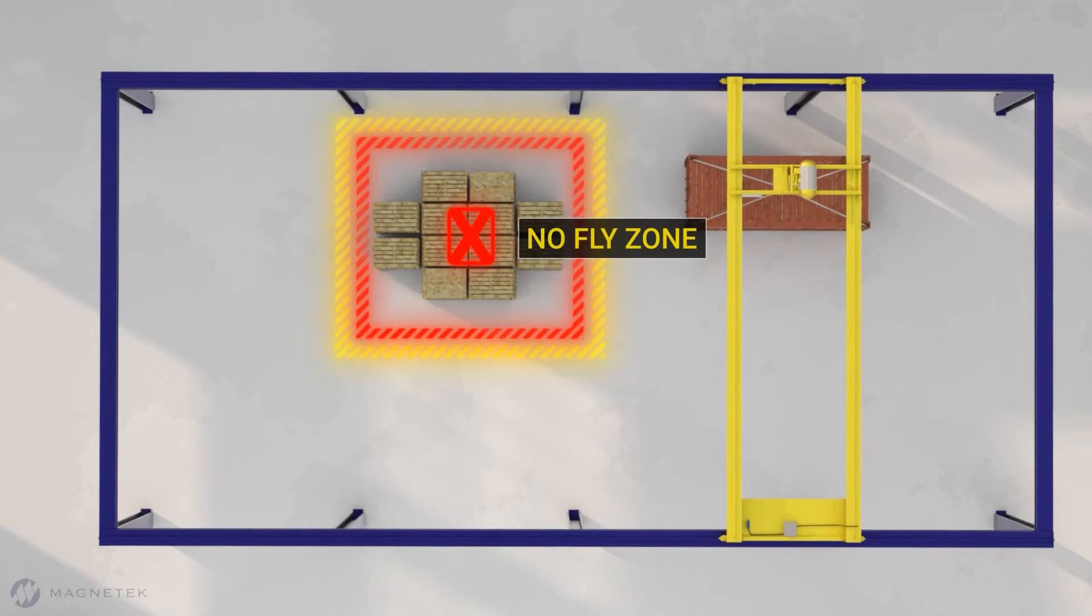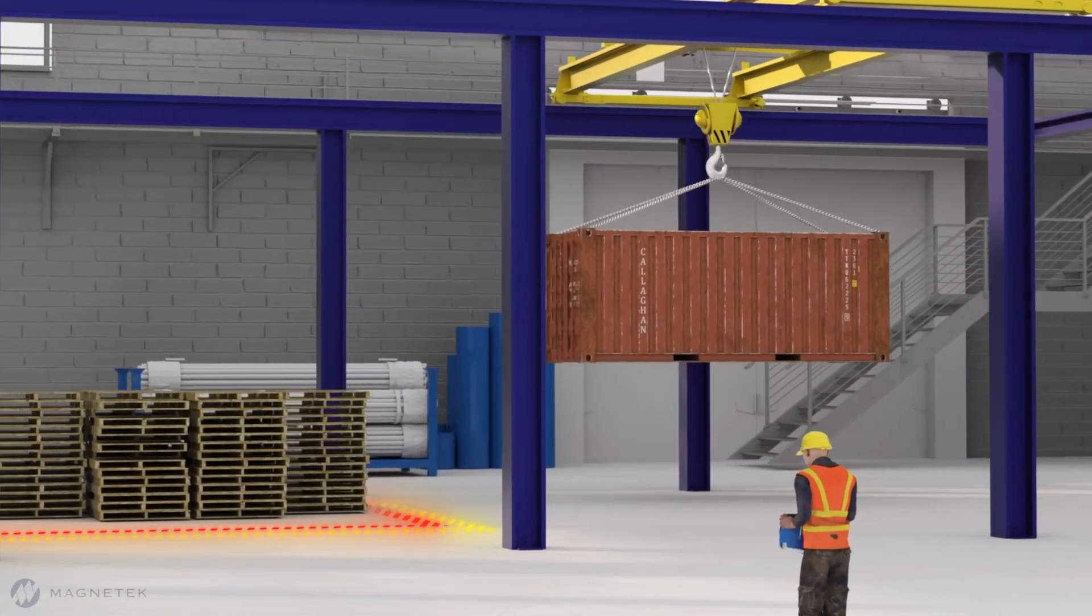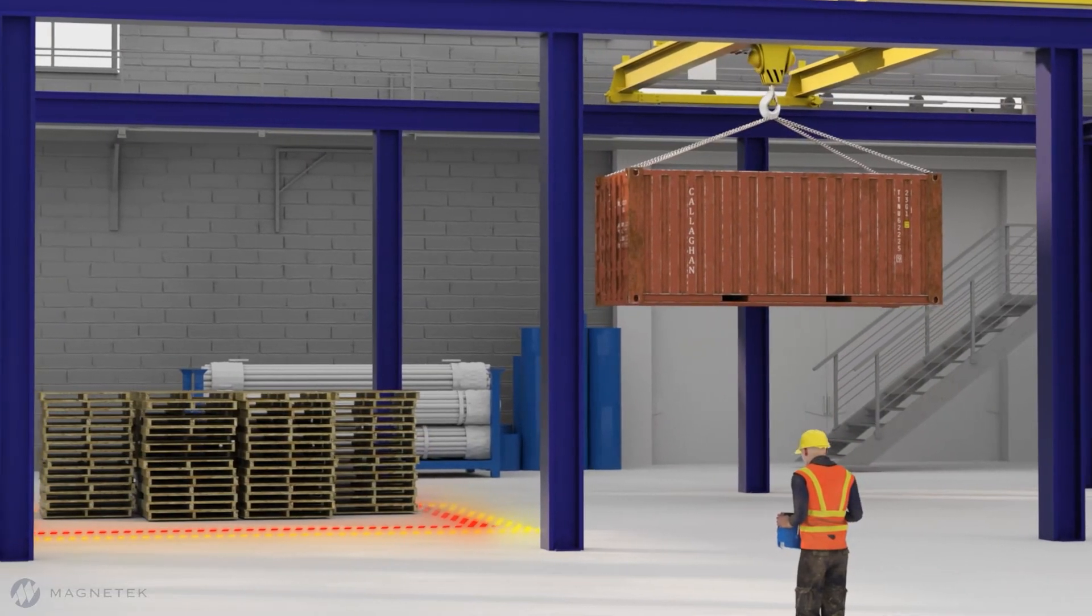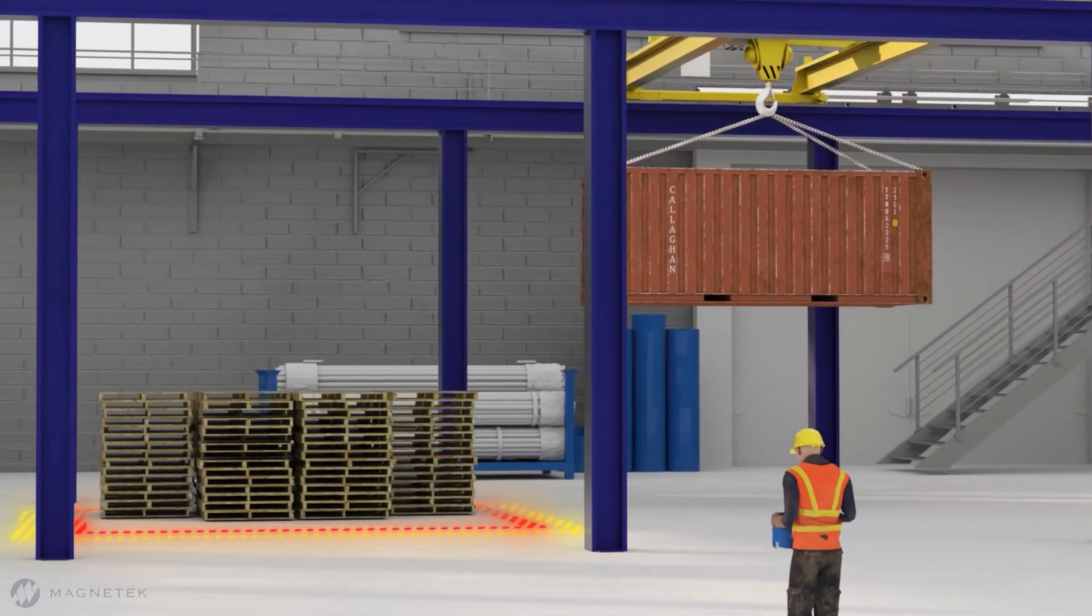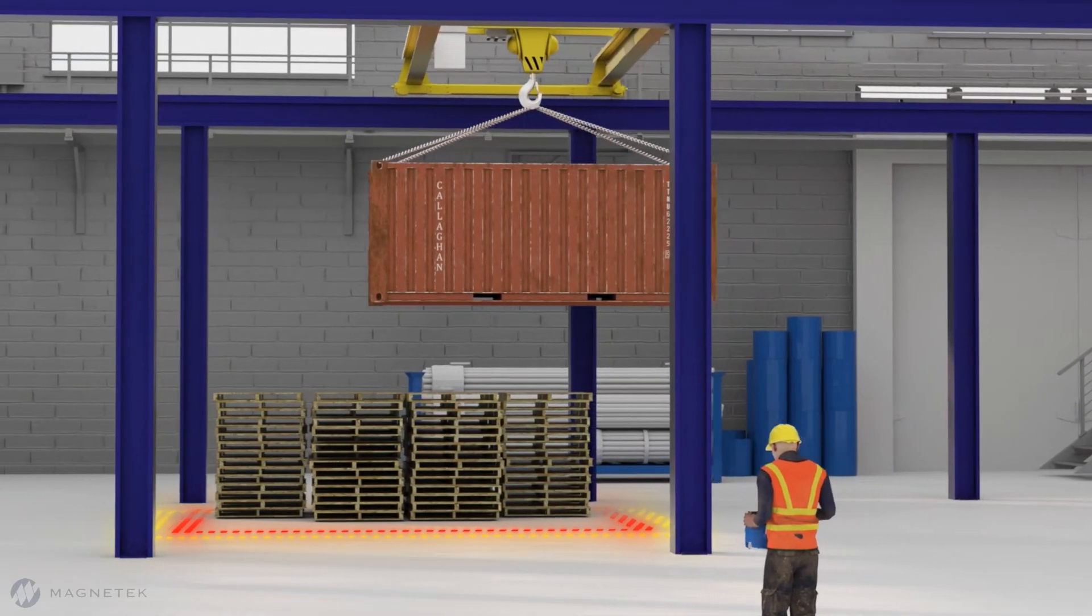Intelliprotect also has the capability to create fly-over no-fly zones. Using programmed limit switches or the upper limit on the hoist, the no-fly zone can be programmed to allow the crane to travel over the top of the pallets if at the correct height.